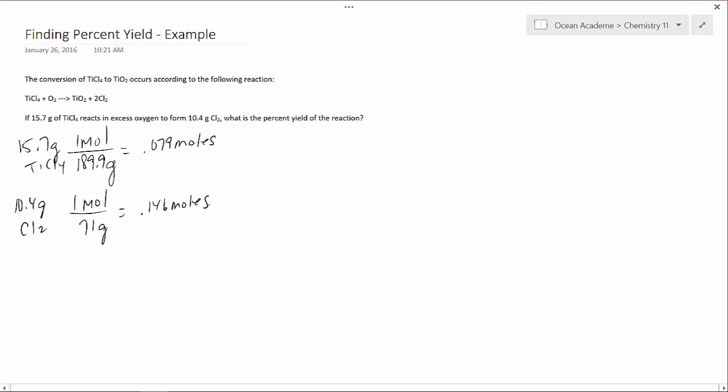Now our larger is our limiting reagent and the other is our excess. We use our limiting reagent to determine our actual yield, and we use our excess to determine our theoretical.